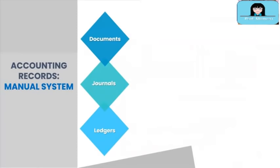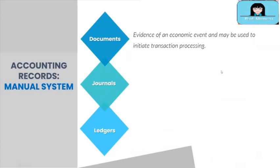Let's start with the accounting records under the manual system, beginning with documents. Documents are evidence of an economic event and may be used to initiate transaction processing. In accounting, information should be reliable, and reliable information requires supporting documents. Without supporting documents the information is questionable, and that is a red flag to auditors.